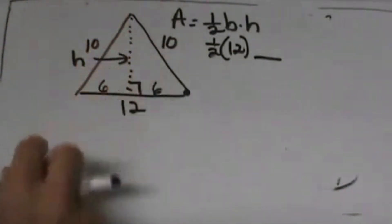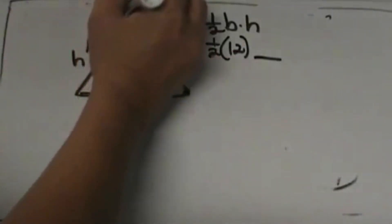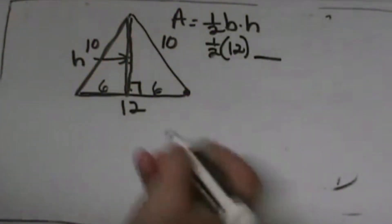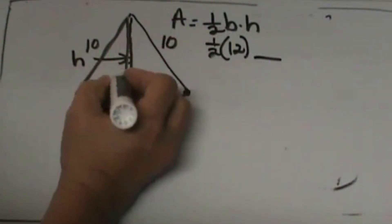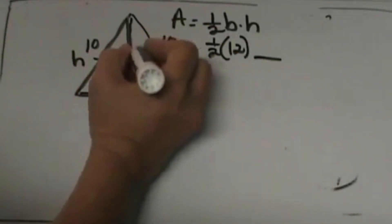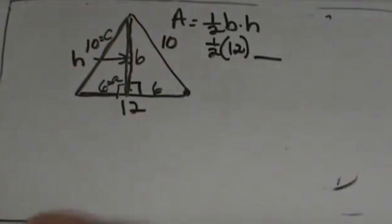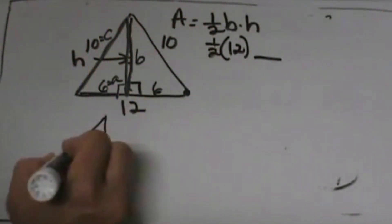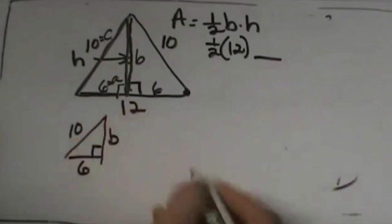Now I can use the Pythagorean Theorem using this right triangle to find the height. I'm missing one of the legs. I'm going to call 6 a, the unknown height is b, and c is 10. You can even redraw this on the outside if it helps. This is 6, this is 10, and this is the unknown b.